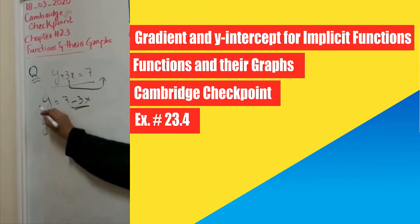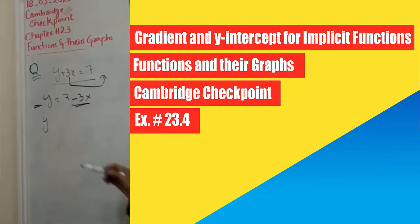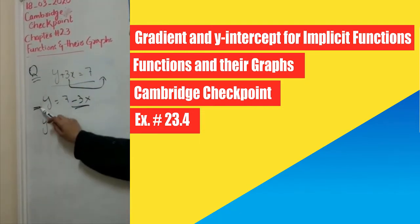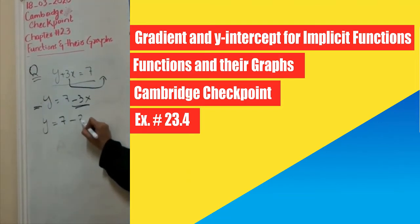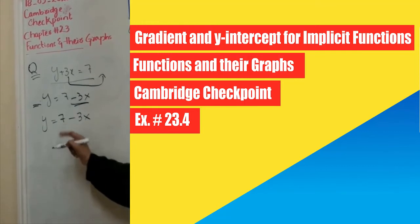So no need to do operations on y because its coefficient is already 1. Now we have explicit expression: 7 minus 3x. But it's not resembling the general equation.